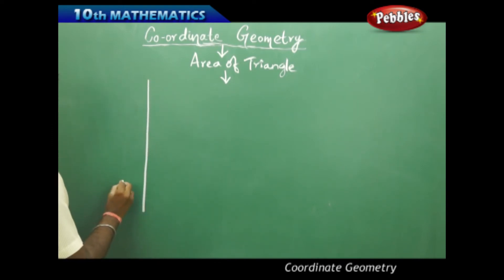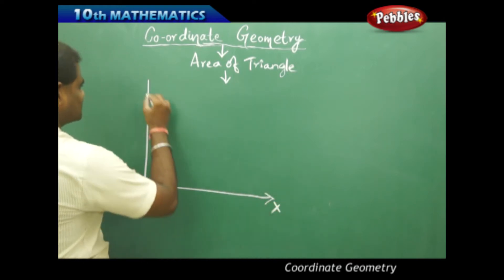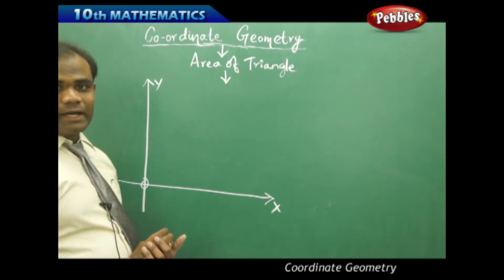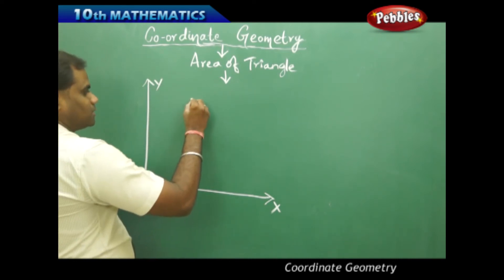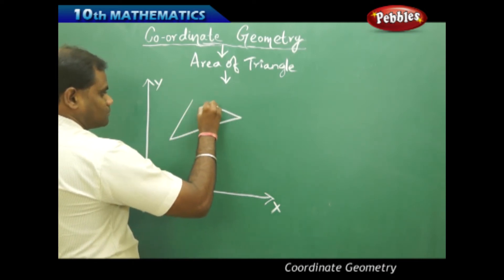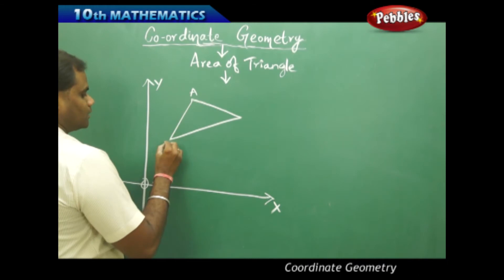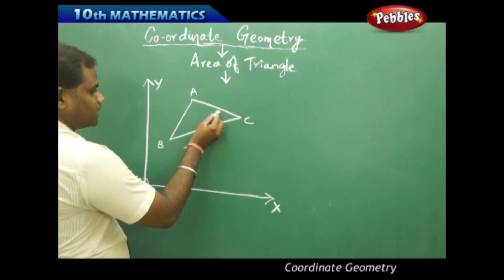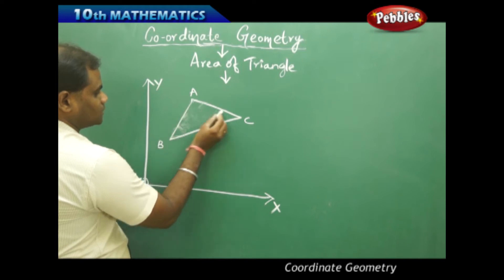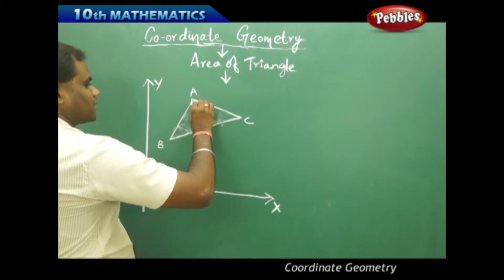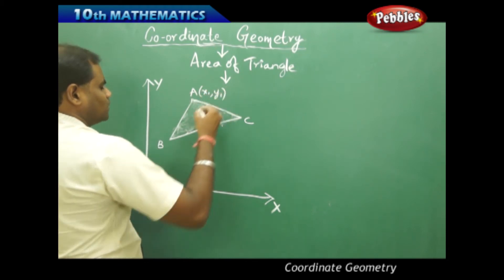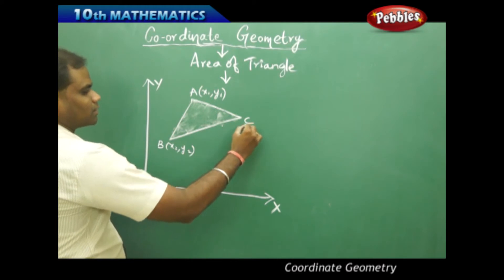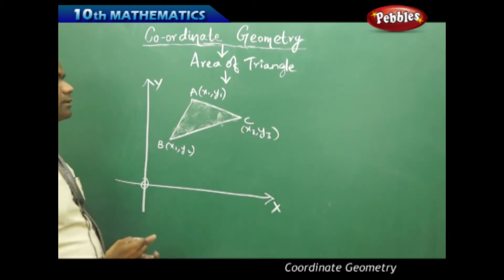This is the x-axis, y-axis, and origin. I take triangle ABC assumed to be in the first quadrant whose area I need to find. The coordinates of A are (x1, y1), coordinates of B are (x2, y2), and coordinates of C are (x3, y3) in order.